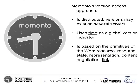Memento's approach ticks almost all of the boxes Christine brought up. It's distributed, so versions can exist on several servers. We use time as our global version indicator — saying something is version 1.0 or 1.2 really doesn't mean anything in a global sense, so the only way we can make use of any sort of indicator is to have global time. And it's based on the primitives of the World Wide Web: a resource, the state of the resource which is a representation, content negotiation, and linking between resources.